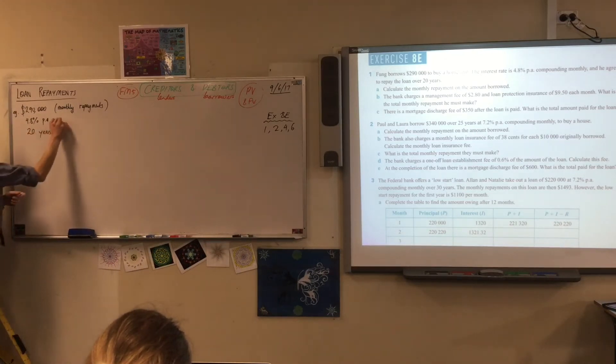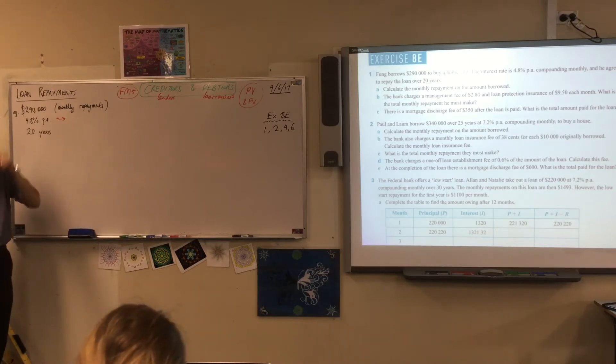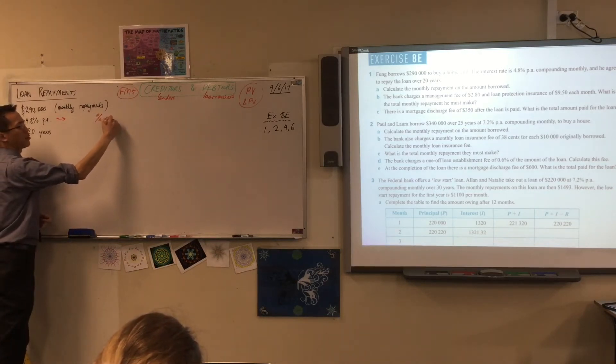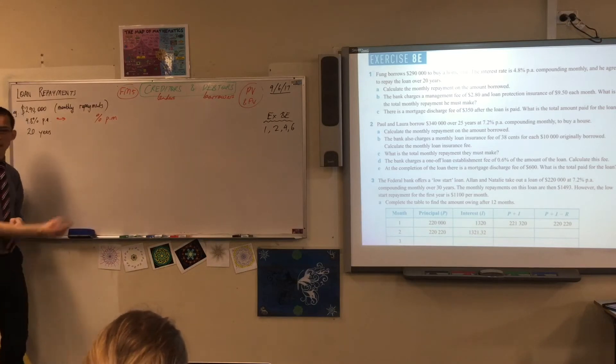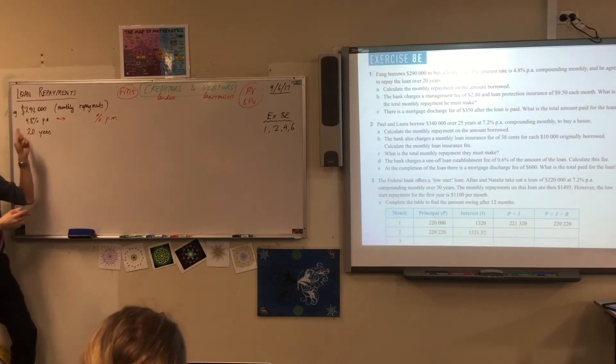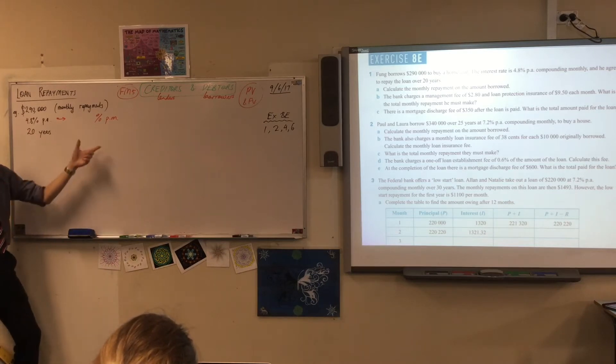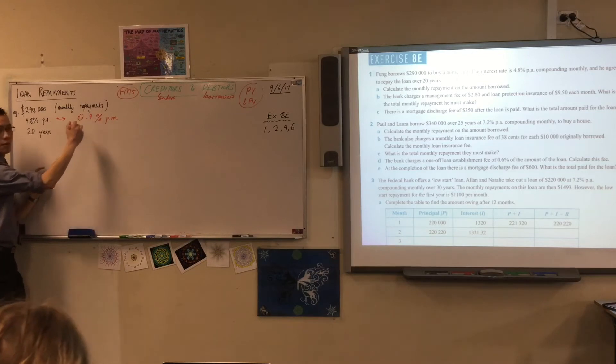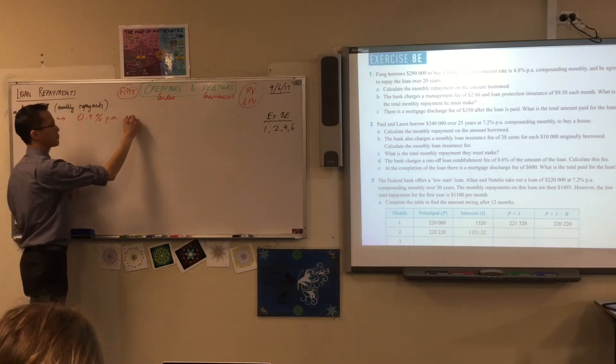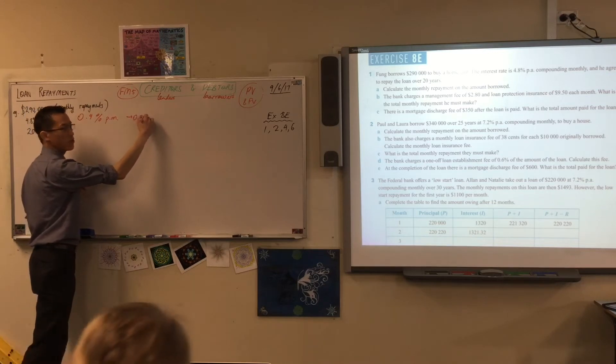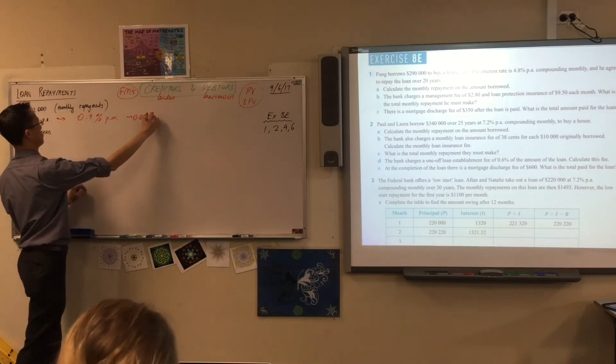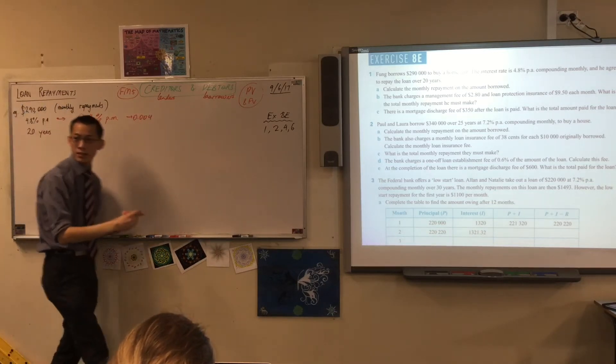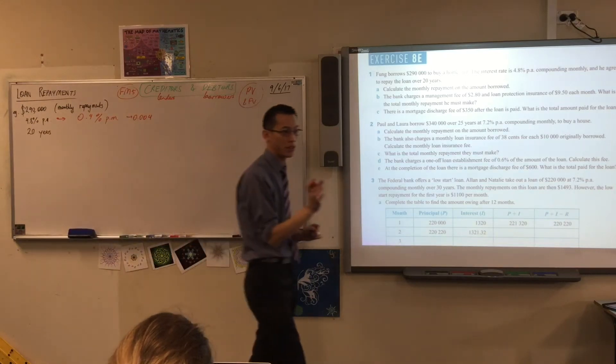4.8% per annum - we want to work out what is that equivalent to as a percentage per month. So what do you do? 0.004. If you divide this by 12, 12 months, right, you're going to get 0.4%, which as a decimal is 0.004.